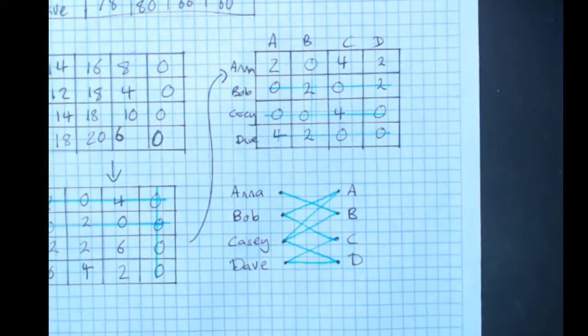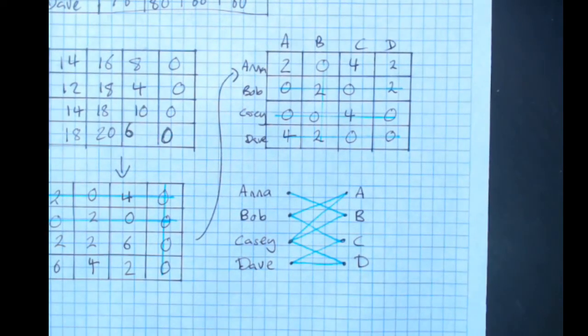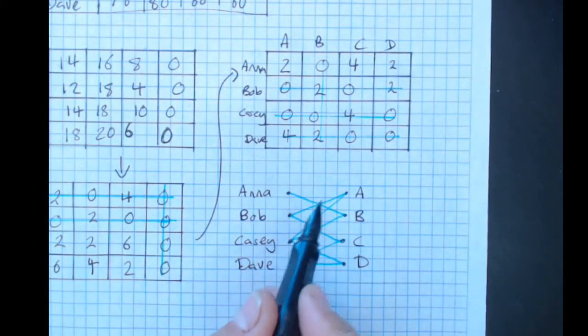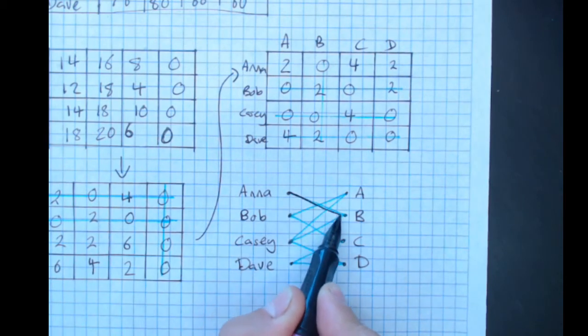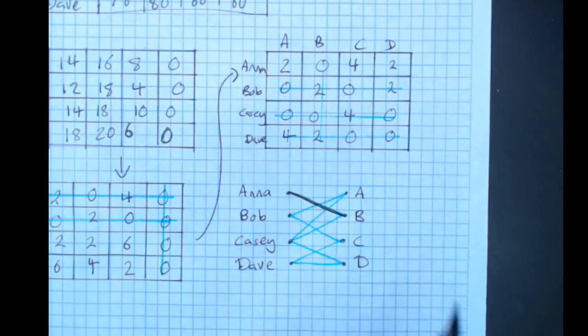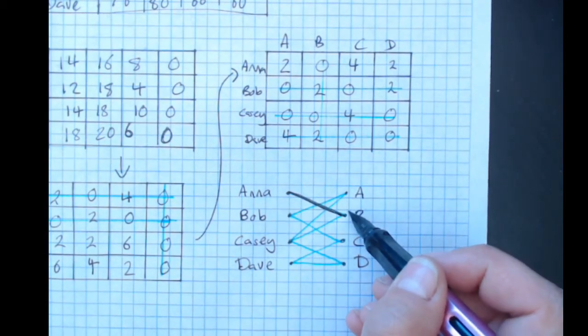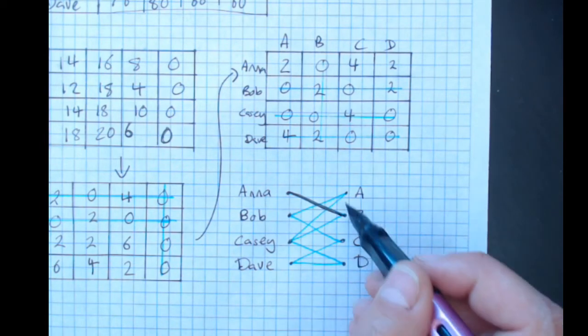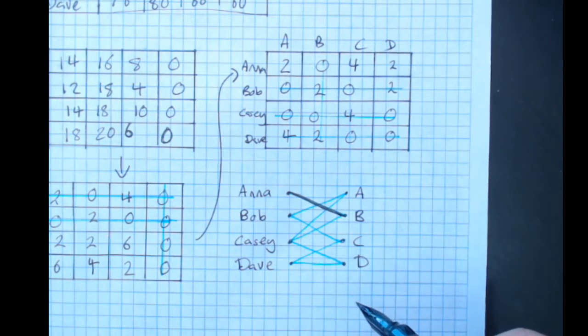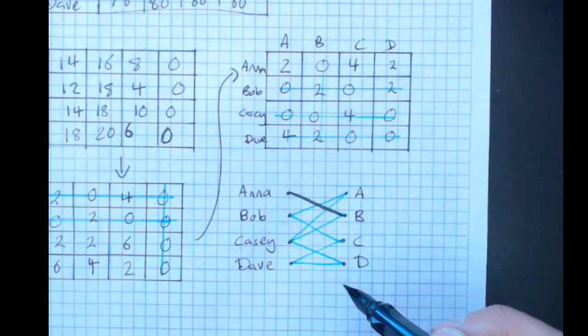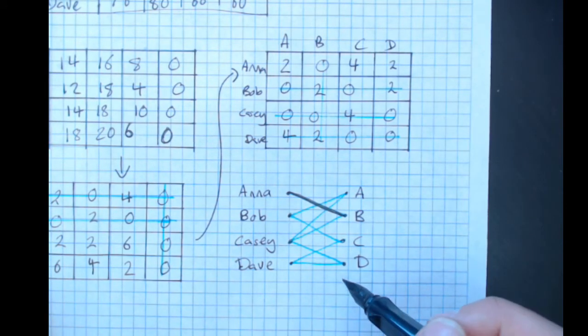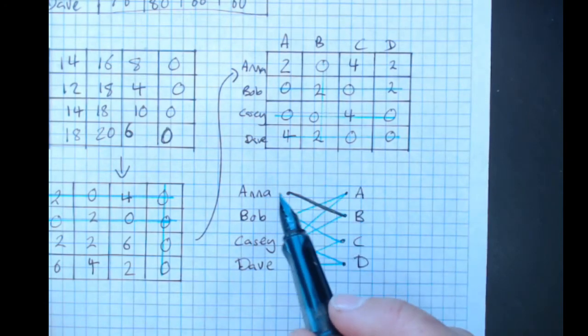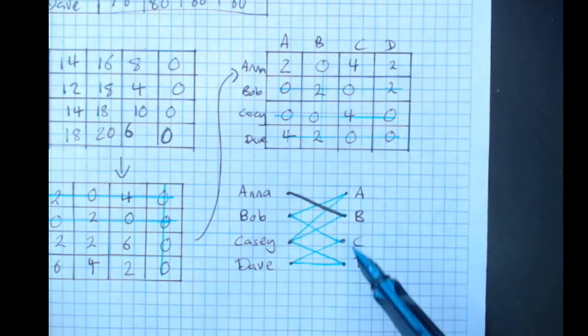Now that we have a bipartite graph, we need to check to see if there's any limitations. Anna can only do B. That means Bob can't do B. Everything else has two possibilities. So there are different ways that we could assign this task, but they'd all turn out to be the same minimum time. The only thing that's fixed is Anna has to do B.